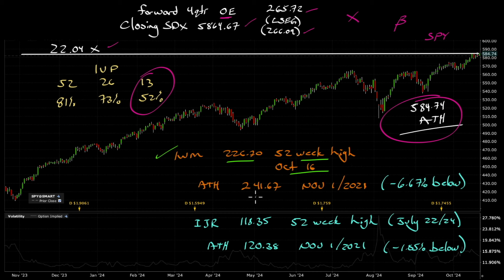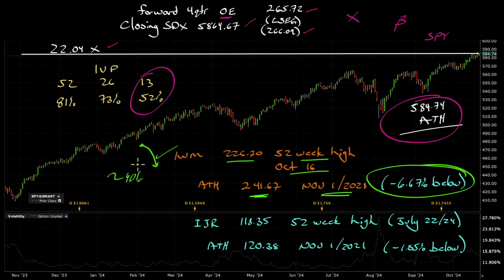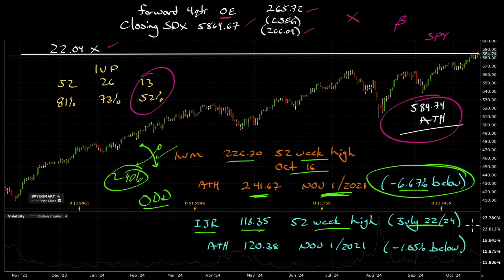IWM at 226.70 — that was a 52-week high set October 16th. All-time high is 241.67, about 7% below. This index has about 40% unprofitable small caps. IJR — the S&P 600, profitable small cap — 52-week high was 118.35 set July 22nd of this year. We closed Friday at 118.15, just 20 cents below the 52-week high, and less than 2% below the all-time high of 120.38 from three years ago.